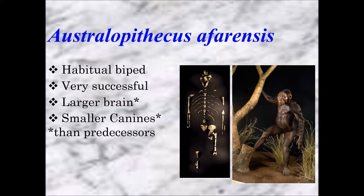They've got a slightly larger brain than their predecessors — comparing to Sahelanthropus tchadensis, their brain is a little bigger. Their canine teeth are also smaller. Humans have the smallest canine teeth of all the apes, and that reduction started a long time ago — about 3.2 million years ago. In Australopithecus afarensis, canines are smaller than chimps and smaller than Sahelanthropus tchadensis, getting smaller over time.